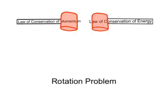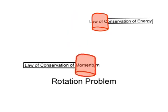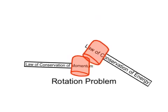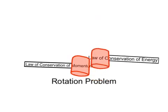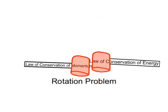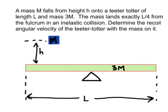For that last problem, we only really needed one of our two hammers, the law of conservation of momentum. But sometimes, you might need to take both sledgehammers to a rotation problem. We have a mass M at height h above a teeter-totter. It's going to fall, hitting the teeter-totter at exactly a quarter of its length, causing the whole system to rotate. And we want to know the final angular velocity of the rotating teeter-totter.